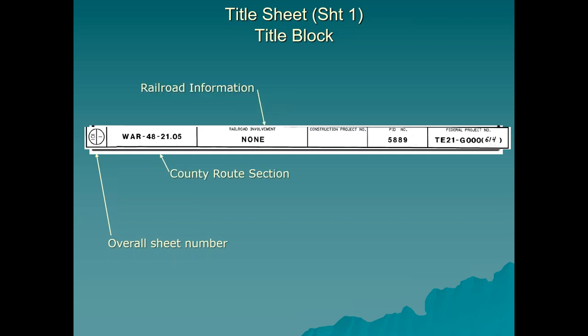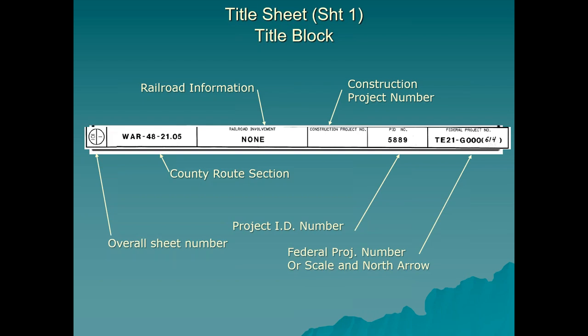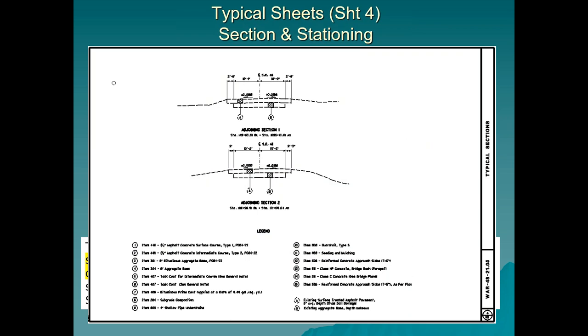At the very bottom of the title block is the overall sheet numbering — this is sheet one of 101, which includes the right-of-way sheets. We also have the county route and section; if there were a railroad on this project, we would name the railroads involved. The construction project number is not included in the title block until the project is sold. We do have the PID number, assigned before the project ever starts, and a federal project number if federal dollars are involved.